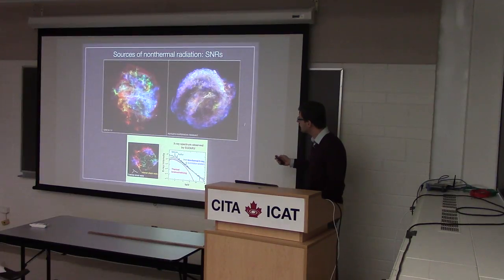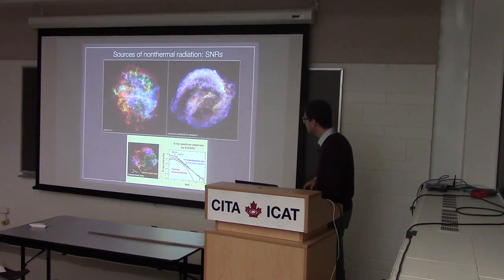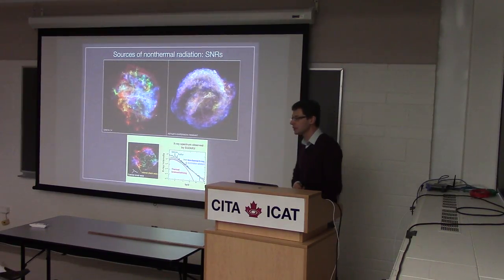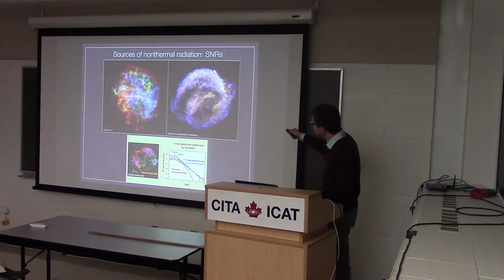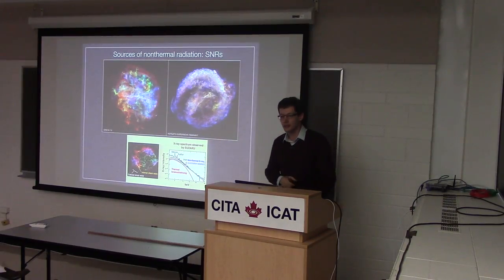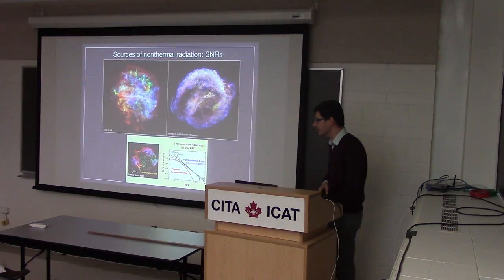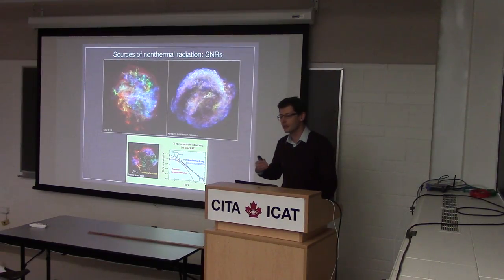Here's a typical example of a supernova remnant. The colorful stuff is thermal emission from X-ray lines, but what I'm interested in are the blue things — non-thermal emission. You can see an interesting correlation between these blue colors and the periphery of the remnant, which is presumably where the shock is.